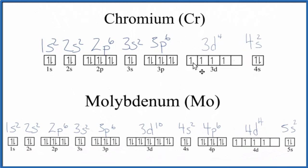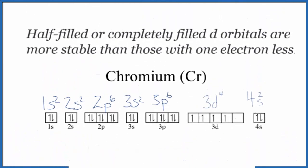When we look at chromium we can see that we almost have the 3d4—one electron in each box here—but the last box doesn't have any. And down here for molybdenum it's the same deal. We have four, it's almost half filled. And what we find is that with half-filled d orbitals that's much more stable than having this partially filled d orbital.